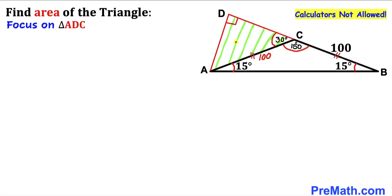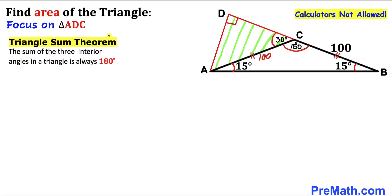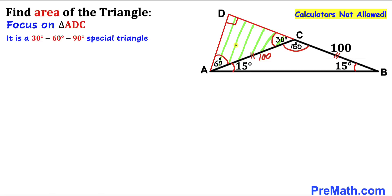Let's focus on right triangle ADC and apply the triangle sum theorem again. The sum of the three interior angles is 180 degrees. Since angle ACD is 30 degrees and angle ADC is 90 degrees, angle DAC has to be 60 degrees. So this is our special 30-60-90 triangle.